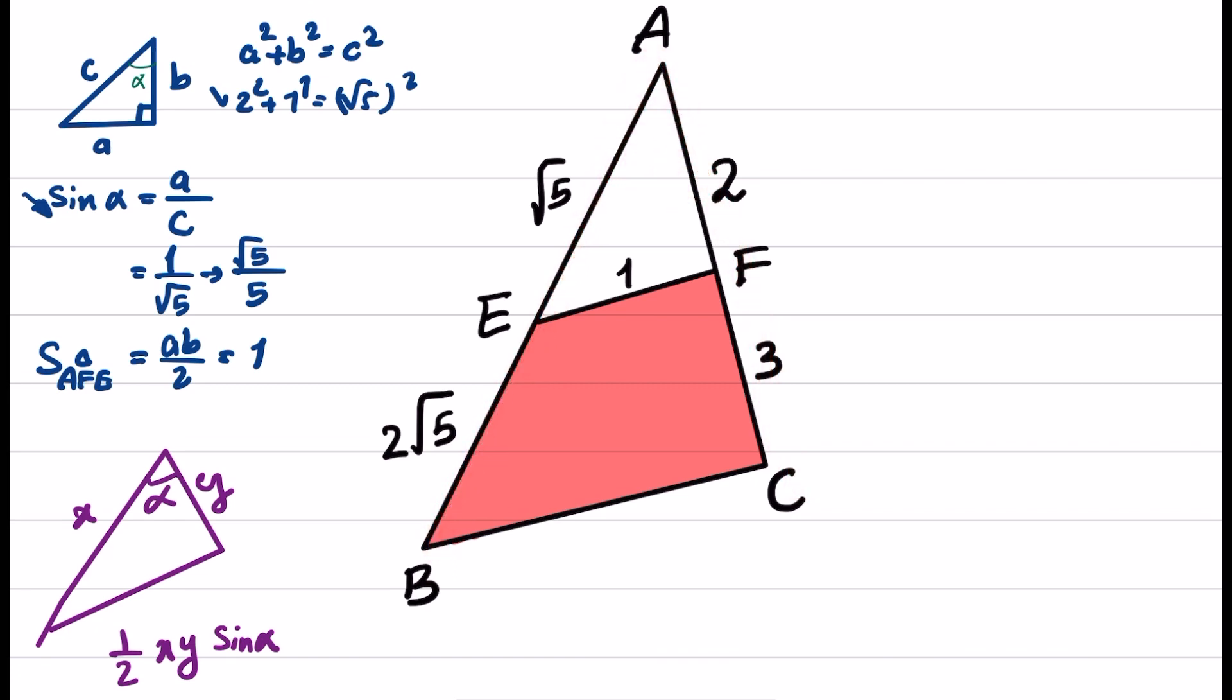If you write the area of ABC, it will be equal to 1 over 2. The X side is 3 times the square root of 5, Y is 2 plus 3, which is 5, and sine alpha we obtained from the previous stage is equal to square root of 5 over 5. We can simplify this, and this will give me 3 times 5 equals 15 over 2, which is equal to 7.5.